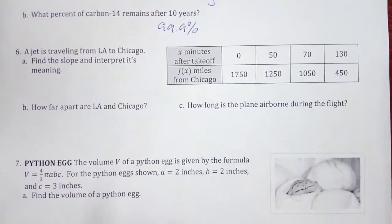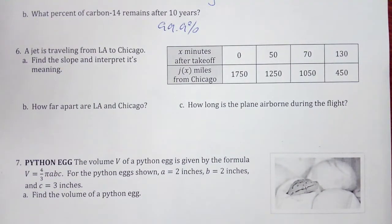Okay, a jet is traveling from L.A. to Chicago. Find the slope and interpret its meaning. How far apart are L.A. and Chicago? How long is the plane airborne during the flight?